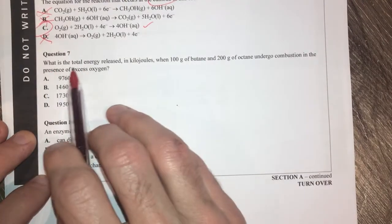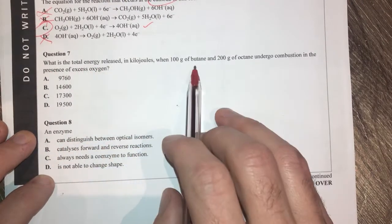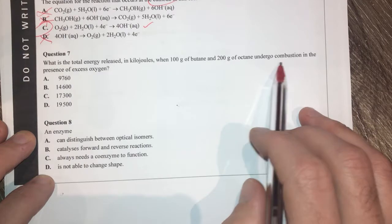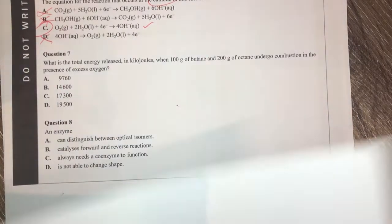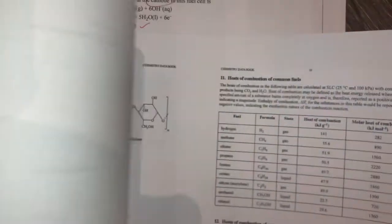Question 7. Question 7 is what is the total energy released in kilojoules when this is burnt or combusted by the looks of it, in the presence of oxygen. I need to look at my data booklet for that one.